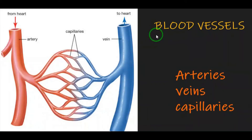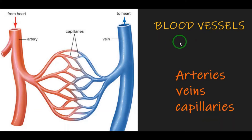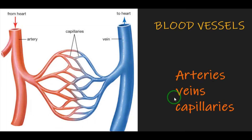Today we are going to discuss about blood vessels. Blood vessels are a network of branch tubes that transport blood. These blood vessels are three types: arteries, veins and capillaries. Now you can see here — this is an artery, this is a vein, and this one is capillaries. Now let's see them one by one.